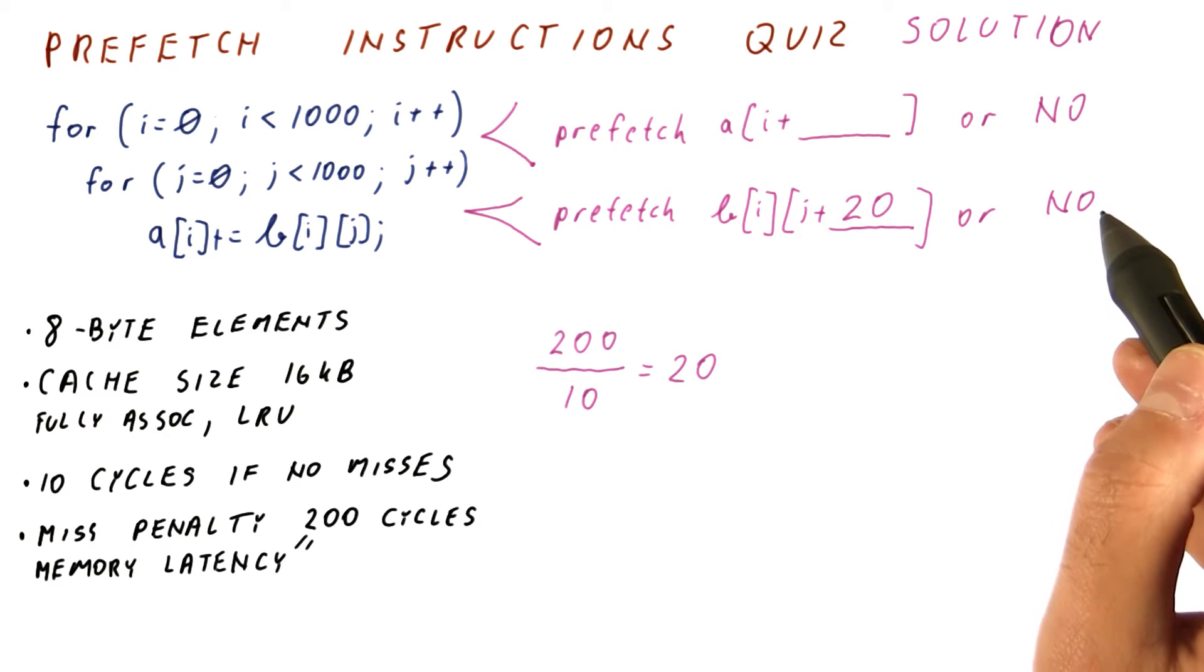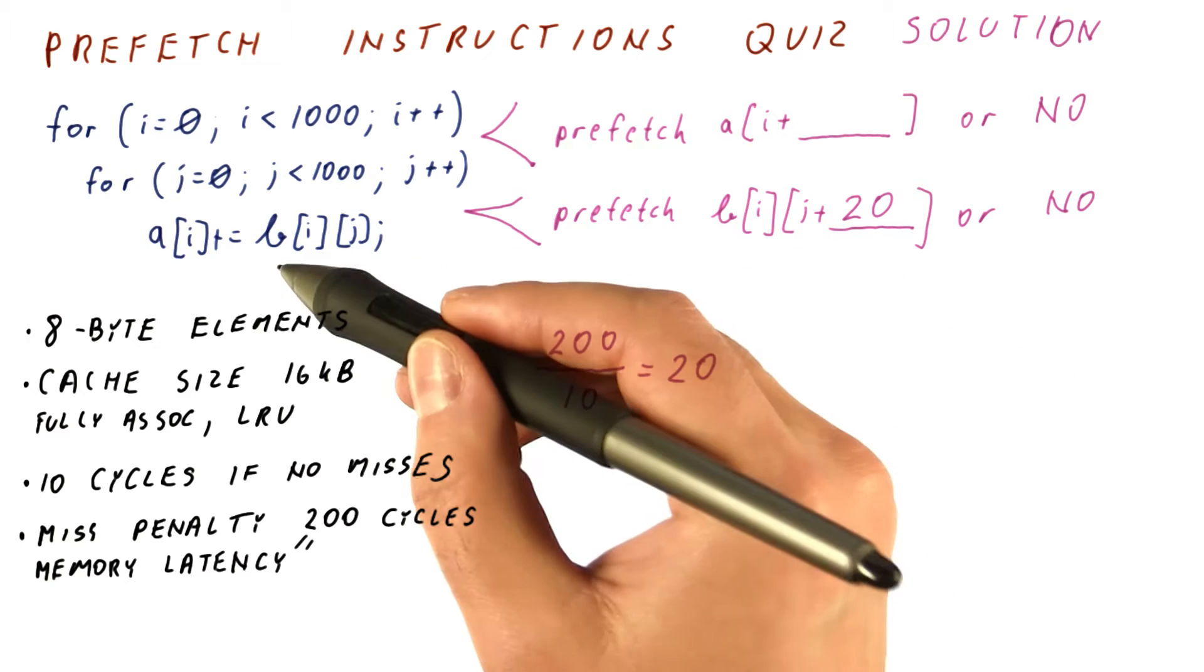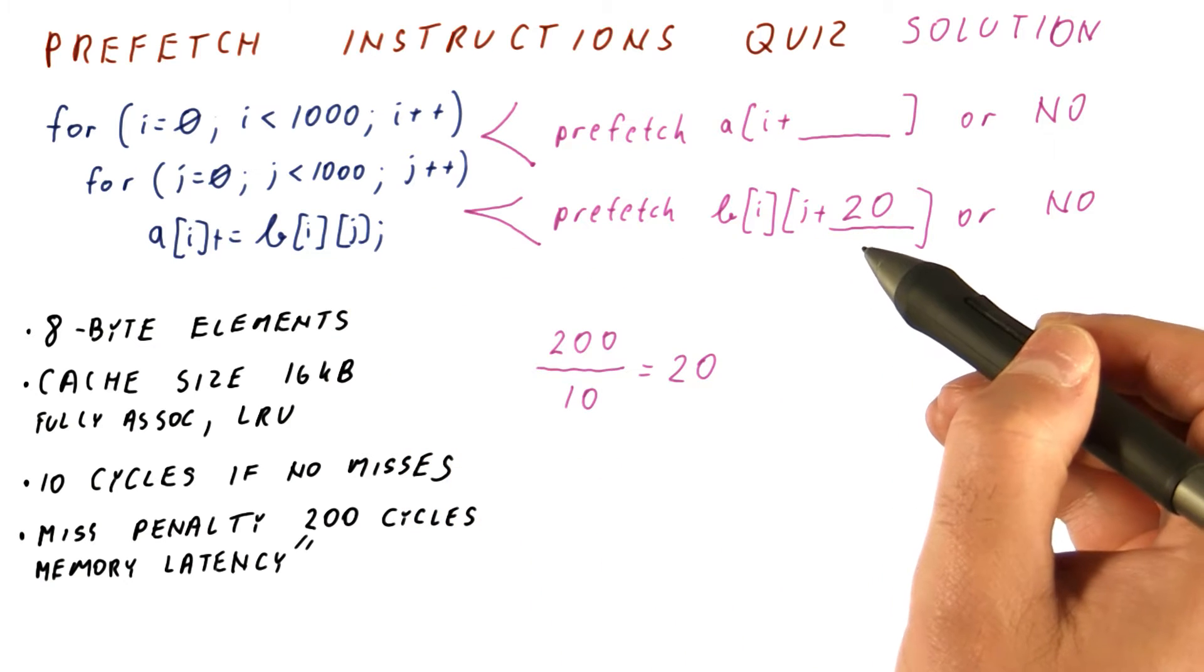We will prefetch 20 iterations ahead of time. If we do it this way, the prefetch will arrive just in time for B to get its value.